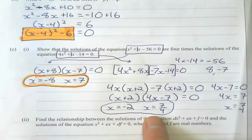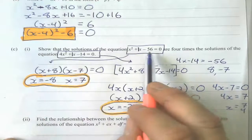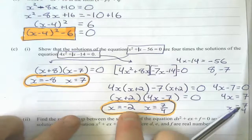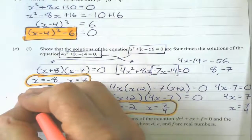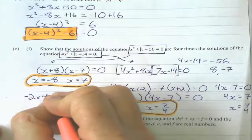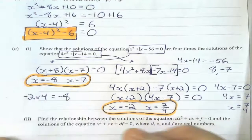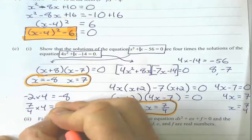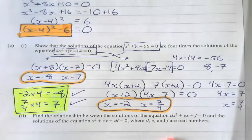Now don't panic, because let's look at what the problem asks: show that the solutions of this equation are 4 times the solutions of this equation. Well, they are! Because negative 2 times 4 is negative 8, and 7 quarters times 4 equals 7. Check, check, done. Interesting problem there.